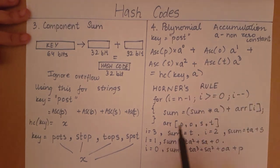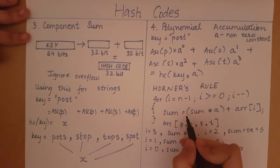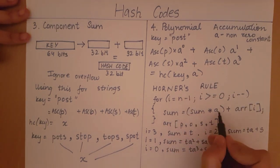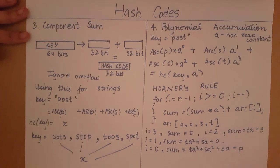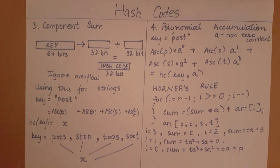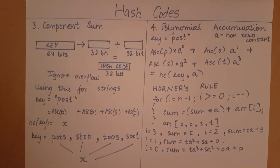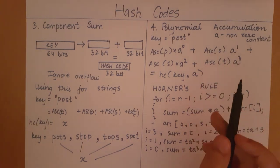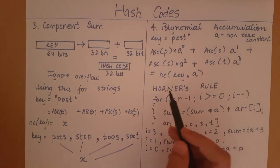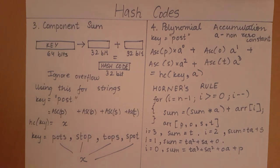Each iteration we multiply the running sum by our non-zero constant a and add the next array element. These are the types of hash codes, out of which polynomial accumulation using Horner's rule is the best.